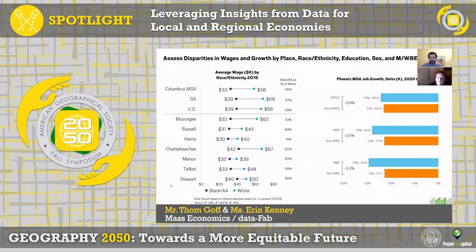This is another example of our functional bridges cross-pollination. Here we're looking at average wages and job growth. On the left-hand side we're seeing major disparities in wages by race and ethnicity for the Columbus, Georgia region, the state of Georgia, the US, and then the counties within the MSA — really stark disparities between Black and African American workers and white workers. The right-hand side shows job growth for BIPOC and non-BIPOC workers.